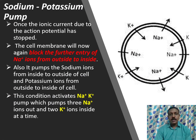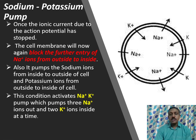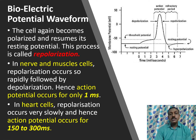Once after the action potential, the sodium-potassium pump will operate. Once the ionic current due to the action potential has stopped, the cell membrane will block the further entry of Na+ ions from outside to inside and block the further entry of K+ ions from inside to outside. It then pumps the sodium ions from inside to outside and potassium ions from outside to inside — specifically, 3 Na+ ions to outside and 2 K+ ions to inside. The cell again becomes polarized and resumes its resting potential.